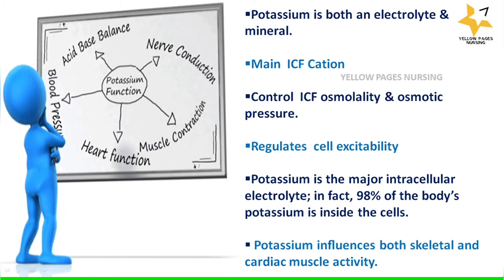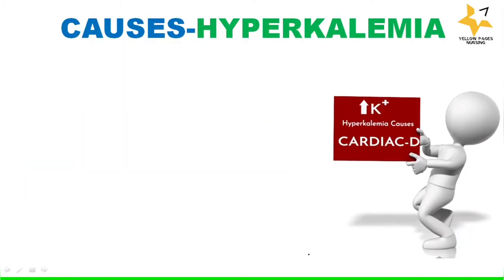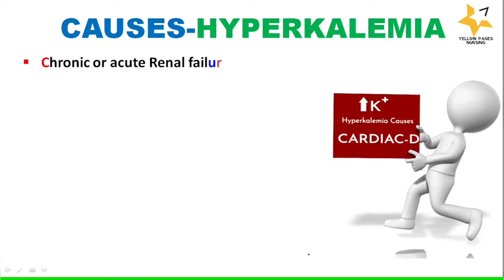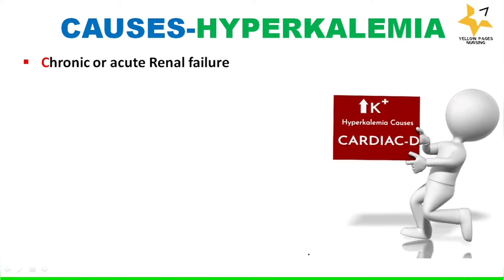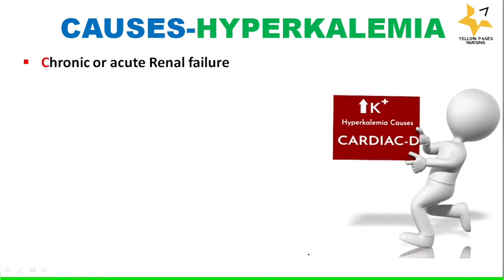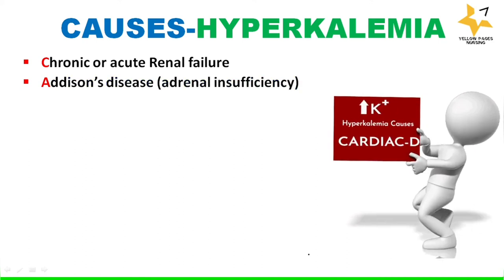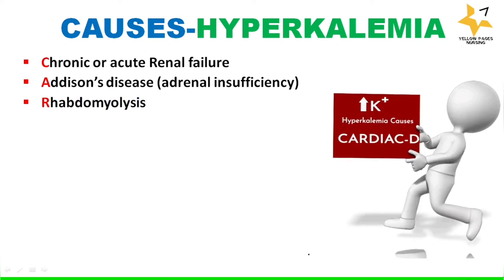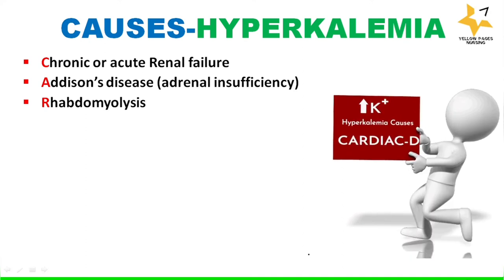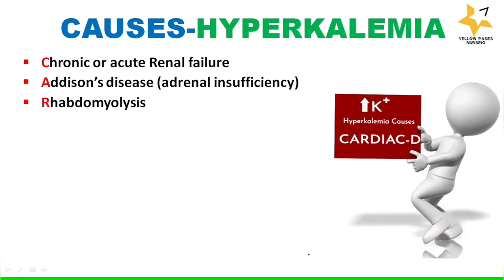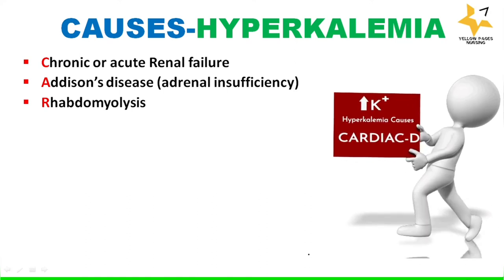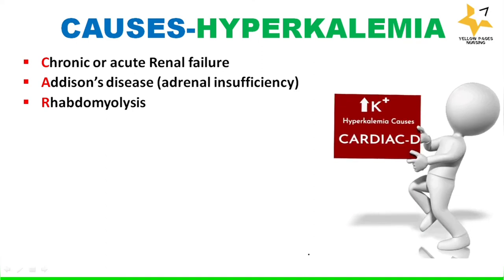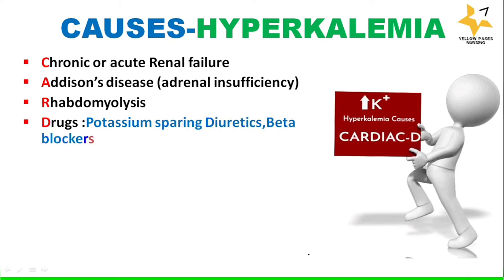The causes of hyperkalemia are categorized under the mnemonic CARD: chronic or acute renal failure, Addison's disease where there is adrenal insufficiency, rhabdomyolysis — a condition where there is breakdown of muscle tissues releasing a damaging protein called myoglobin, which can cause kidney damage and lead to hyperkalemia.